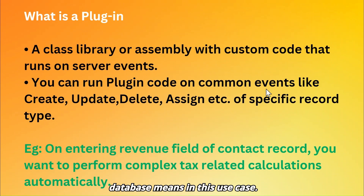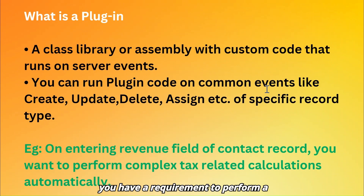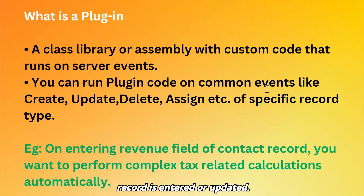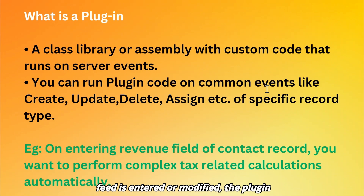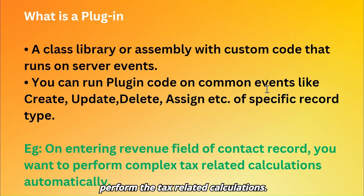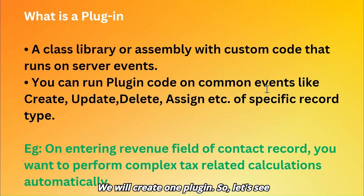Let's take a use case example. Suppose you have a requirement to perform a complex tax-related calculation automatically whenever a certain field — such as the revenue field of a contact record — is entered or updated. In this scenario you can write a plugin that triggers on the update event of a contact record. When the revenue field is entered or modified, the plugin will execute the custom logic to perform the tax-related calculations.